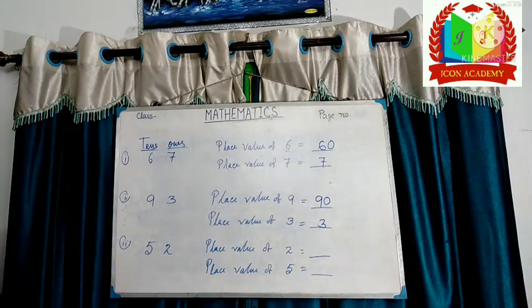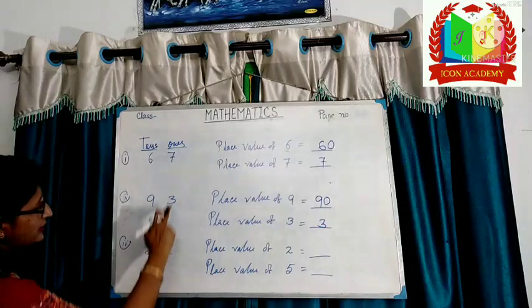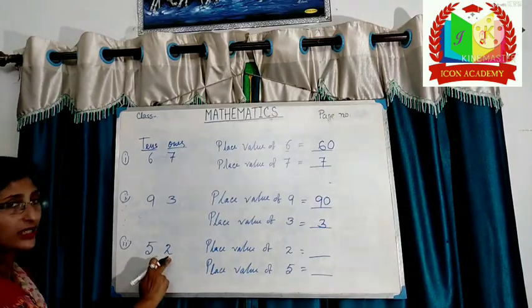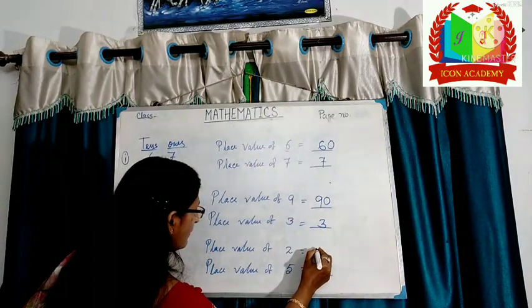Another example, fifty-two. Place value of two. Two is on ones place. So, two is, place value of two. Two.